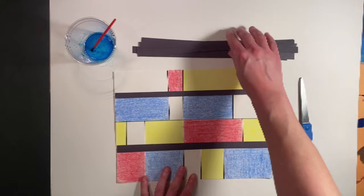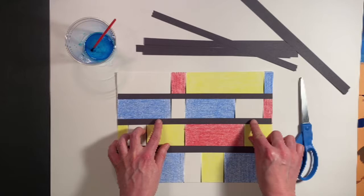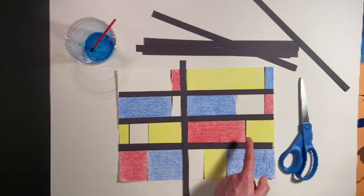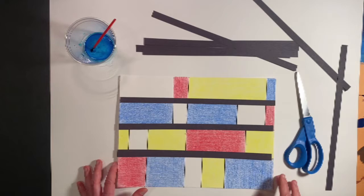So let's try that out. But we want to make sure that each of these lines are covered with the black strip of construction paper.